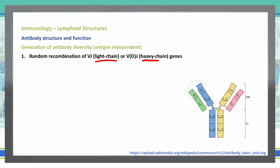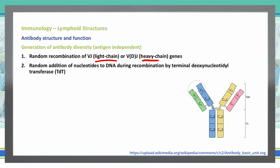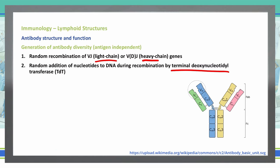Another way antibodies can diversify is by undergoing random addition of nucleotides in the DNA. We're going to be adding some nucleotides, and specifically this is done by using the terminal deoxynucleotidyl transferase, or TDT.